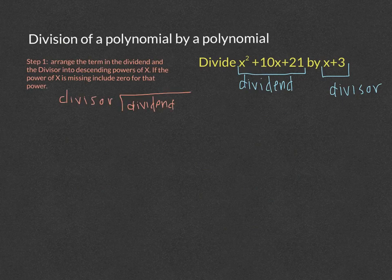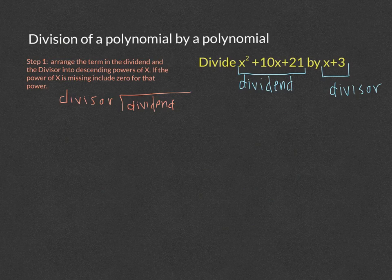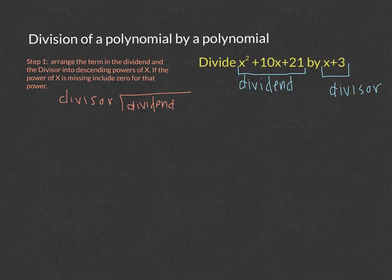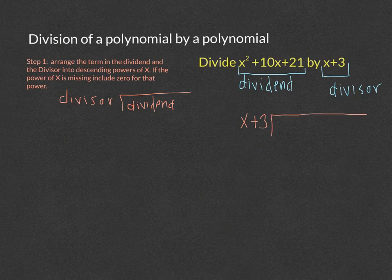Step one: arrange the terms in the dividend and the divisor into descending powers of x. If a power of x is missing — say you go from x squared to a constant, or you have x cubed and skipped x squared — you need to include zero for that power, such as 0x squared. Then write the divisor dividing into the dividend just like regular long division. So x plus 3 divides into x squared plus 10x plus 21.